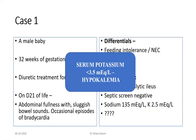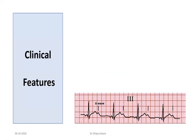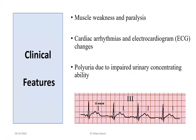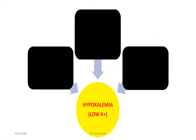ECG showed a characteristic U-wave — a positive wave after T — confirming hypokalemia. Other presentations of hypokalemia include muscle weakness, paralysis, cardiac arrhythmias as seen in this patient, and polyuria. In this particular case, the likely reason for hypokalemia is prolonged diuretic treatment, causing potassium loss through the kidneys.